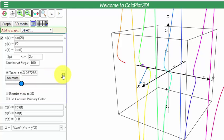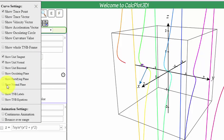You can look at other things. You can also say look at the binormal, the osculating plane. You can see them appear as I click it. You can see the rectifying plane and the normal plane.